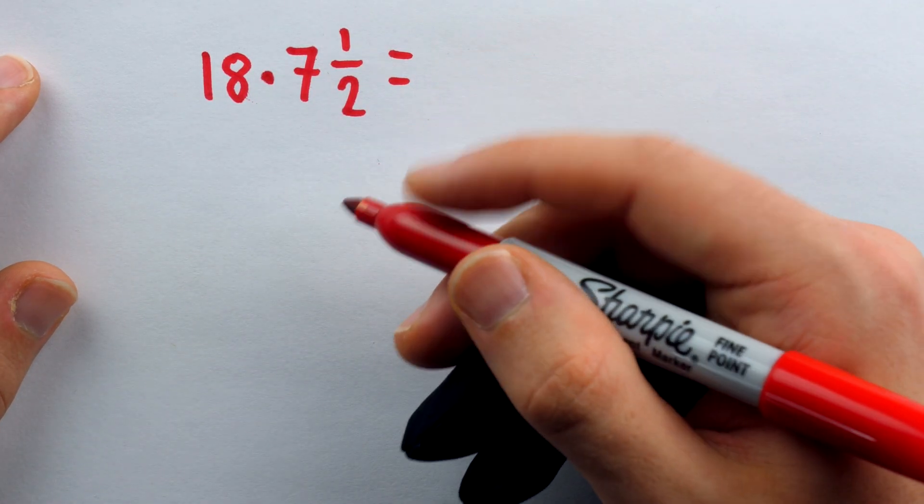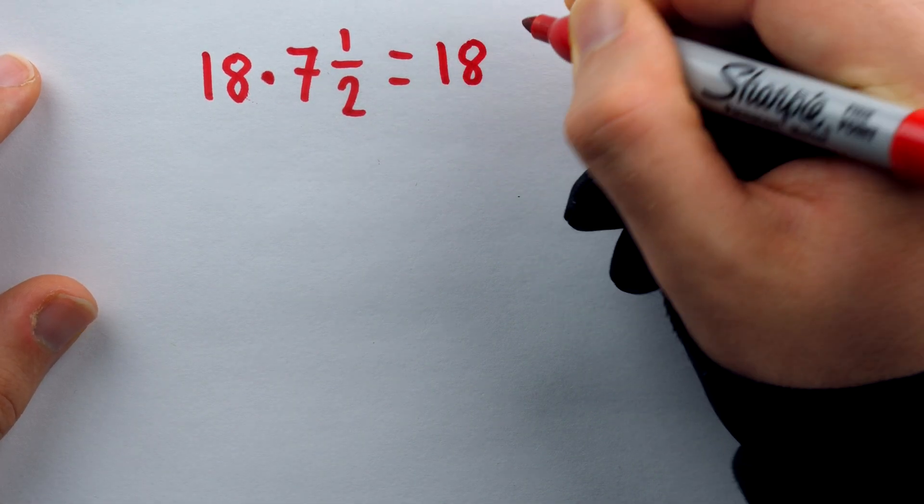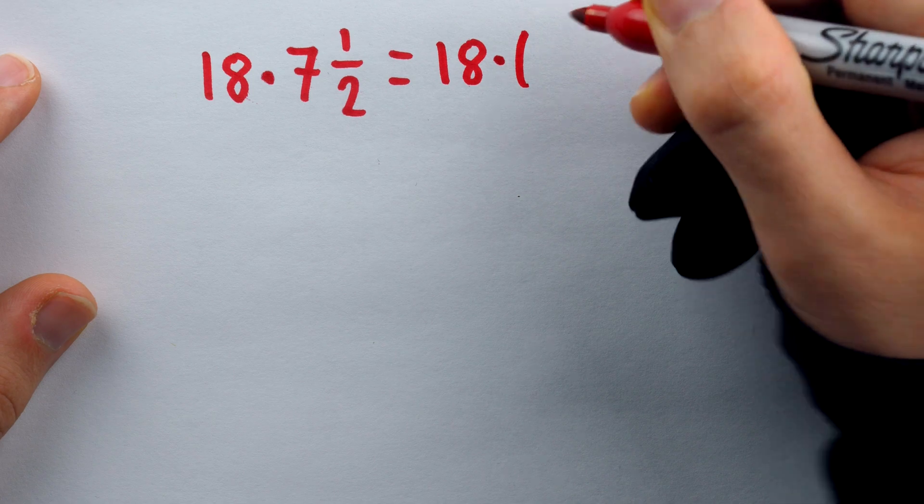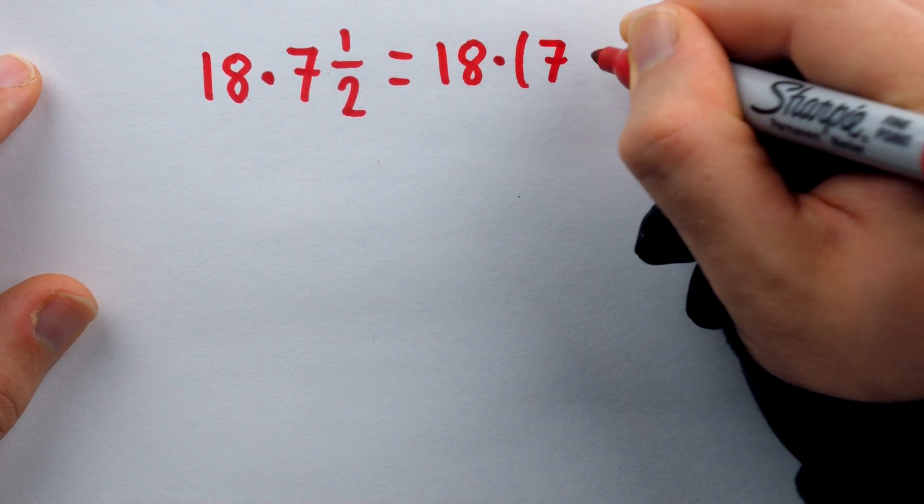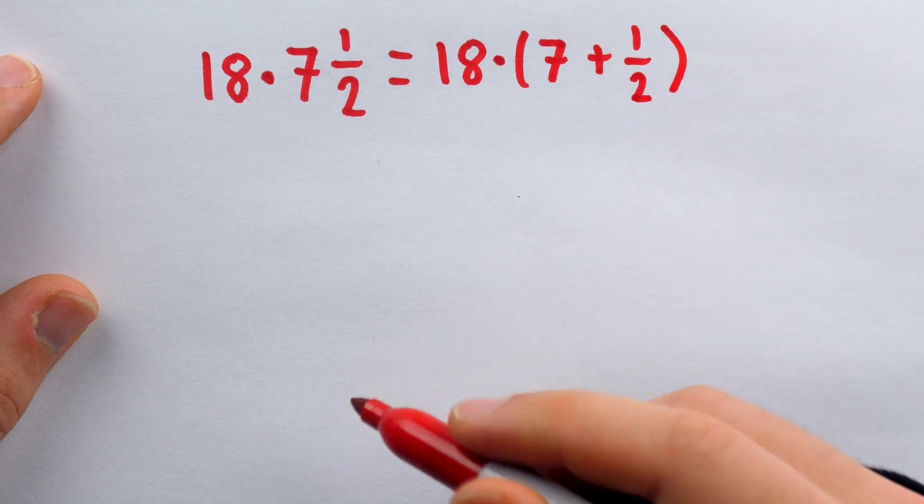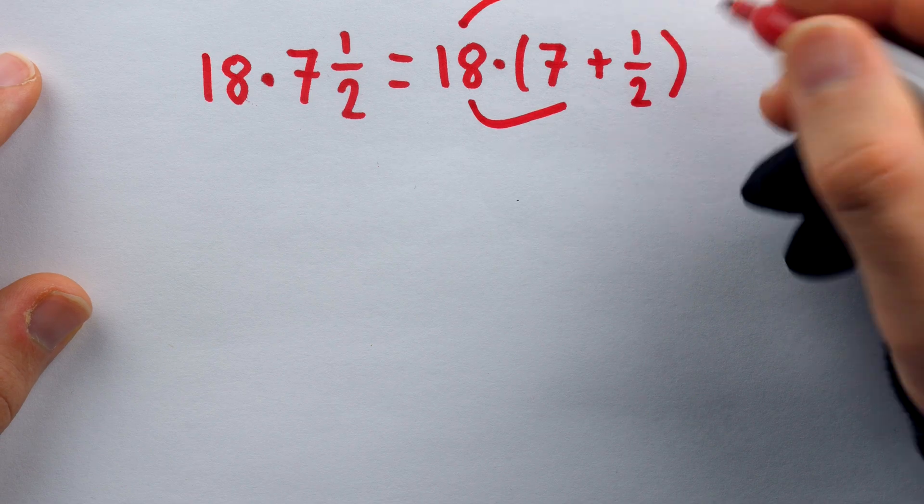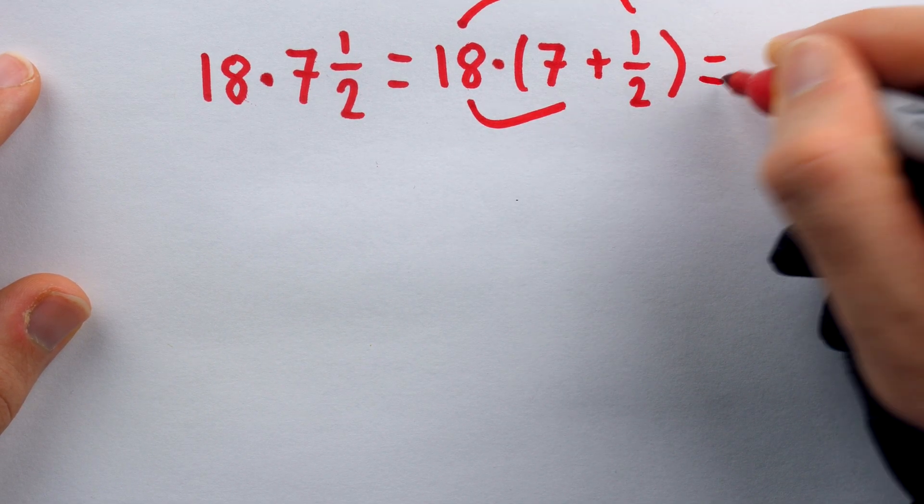One way is to just use the distributive property to break this down a little bit. 18 times 7 and a half is the same as 18 times 7 plus a half. Then we just have to think about 18 times 7, and then separately do 18 times 1 half, and then just add them together.